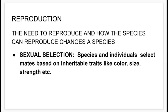Sexual selection is looking for those desired characteristics that can be passed on to the offspring to ensure they are best fit for the environment. This ensures two things: that the offspring will survive and adapt to their environment, and that they will someday be able to reproduce and have fertile offspring themselves.